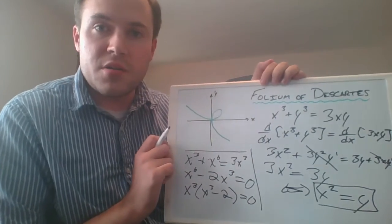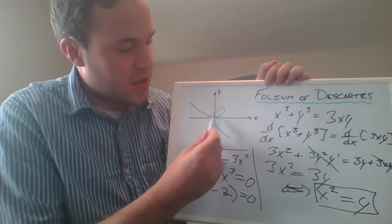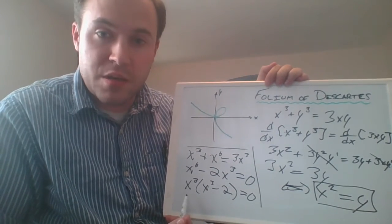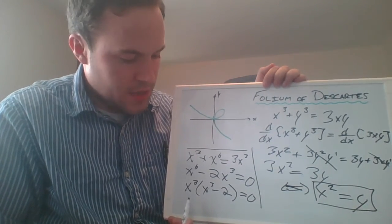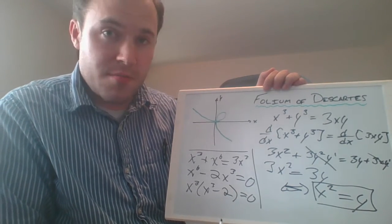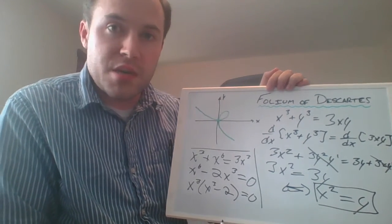The first one given by the x cubed is x equals zero, and that just verifies what we already knew from looking at the picture: that at the origin this thing should have a horizontal tangent line. Now here, the other factor x cubed minus 2 is equal to zero, well that means that x cubed must be equal to 2.